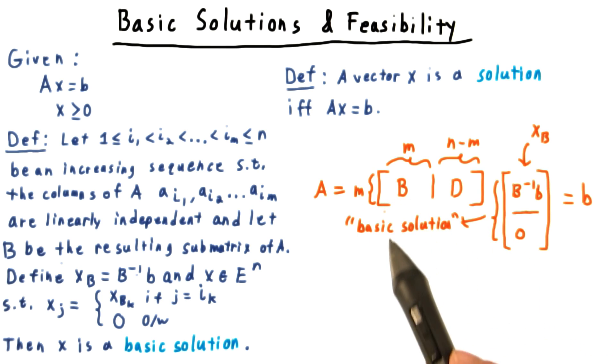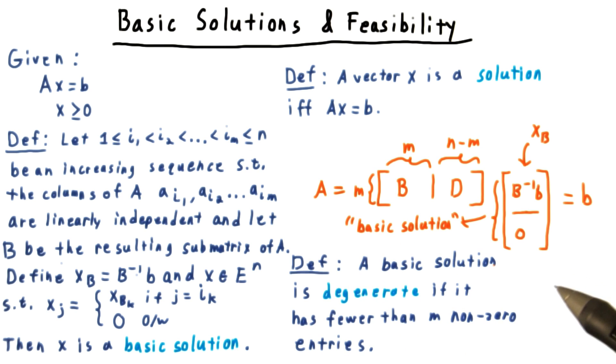From this basis, we get a basic solution. It is possible for more than one basis to yield the same basic solution if some of the entries of this xB are zero.